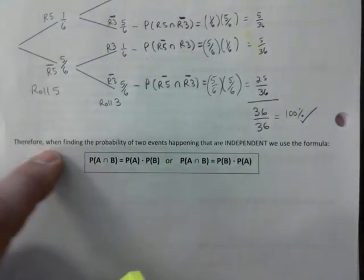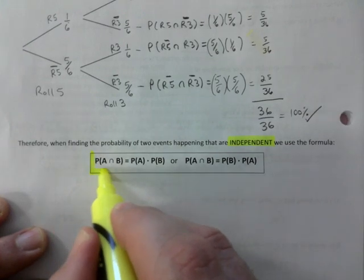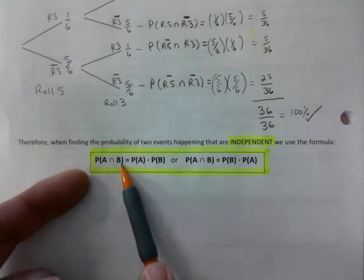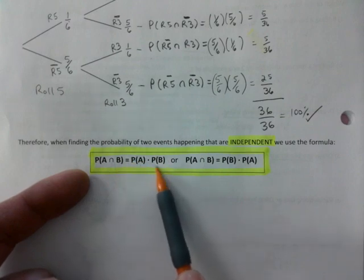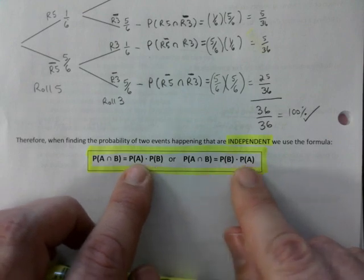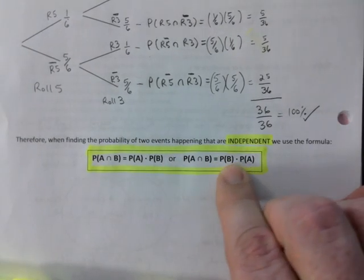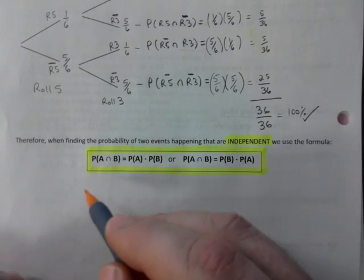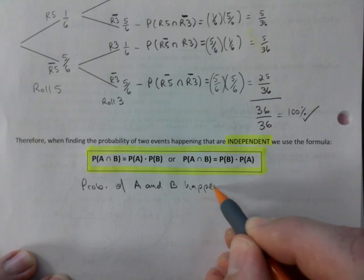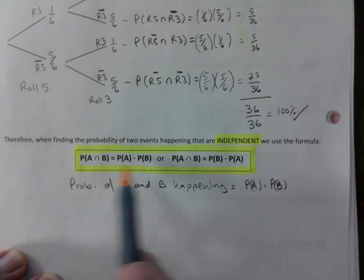Therefore, in finding the probability of two events happening that are independent, we use the following formula. I want to explain this. Probability of A and B happening, you go probability of A happening times probability of B happening. That's just how it is. And you're like, what's the difference between these two? Do you notice the only difference is I flip-flopped B and A here? That's all. So if you just want to have that on your study sheet, I am okay with that. But it wouldn't matter which one you multiply. Probability of A and B happening is probability of A times probability of B. That's another way of looking at this.